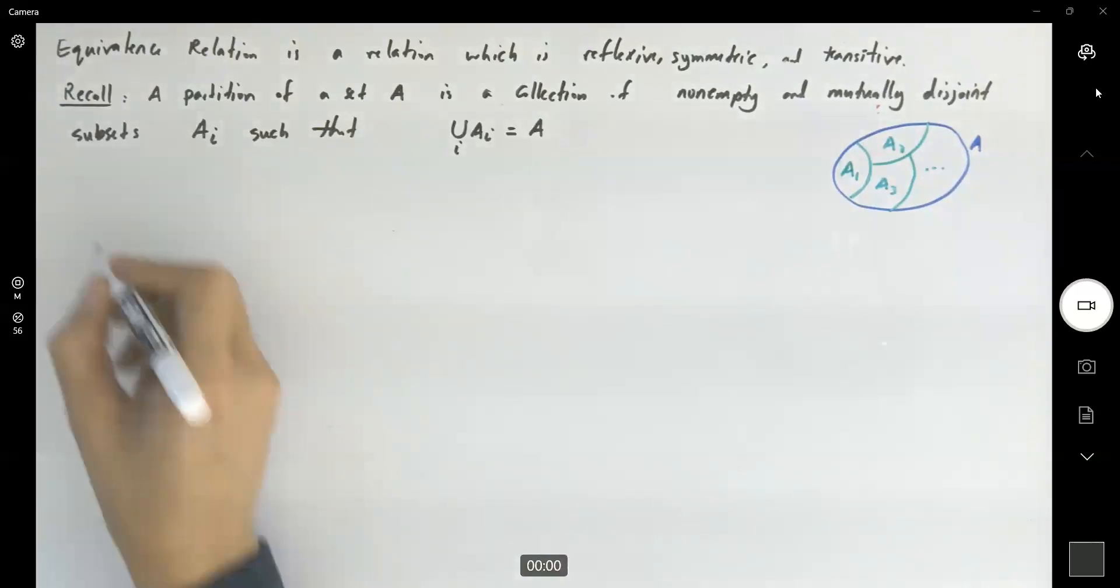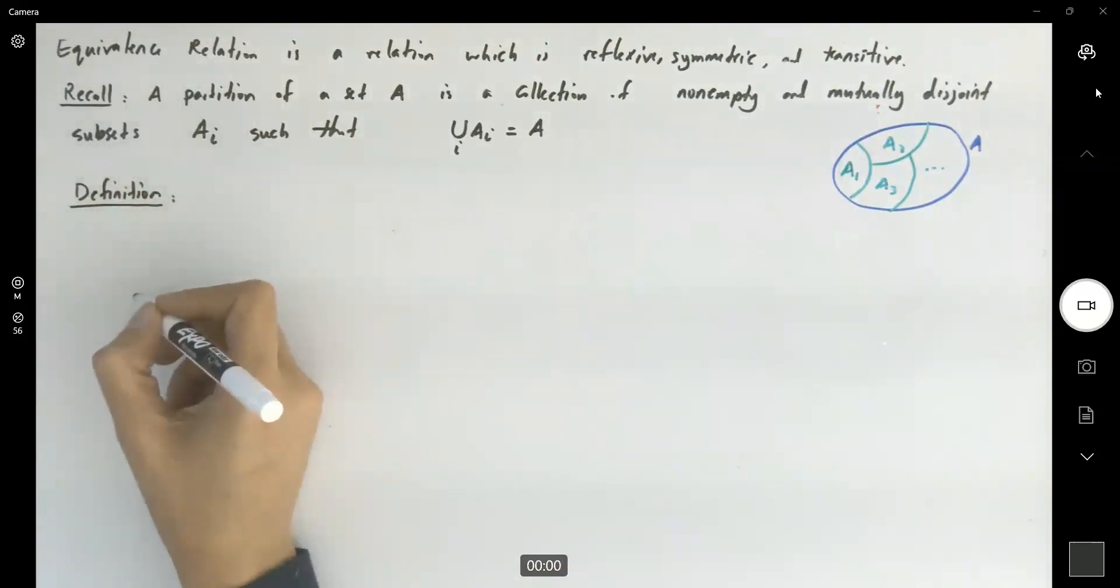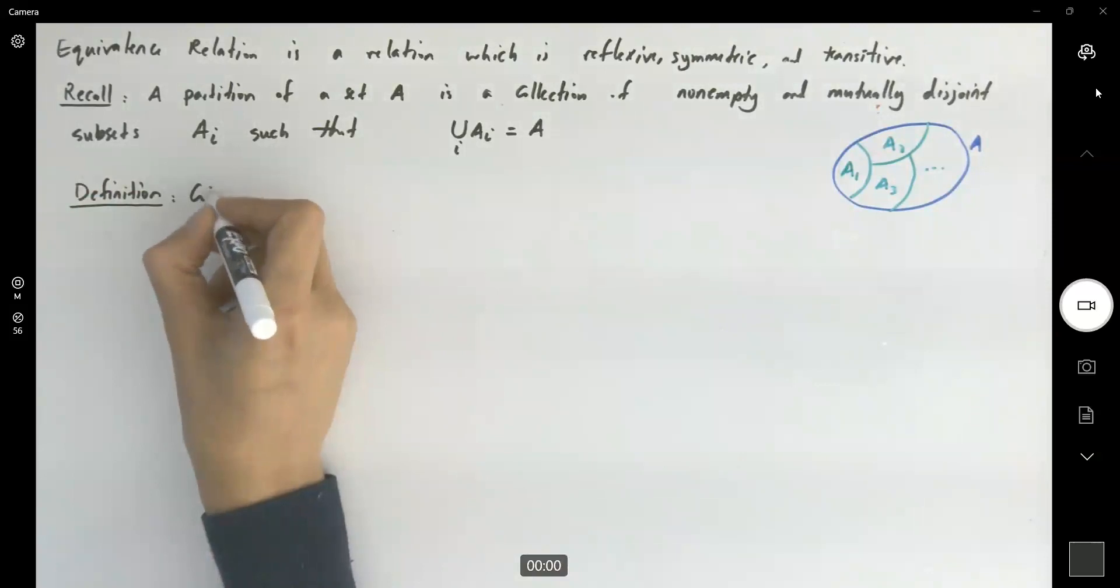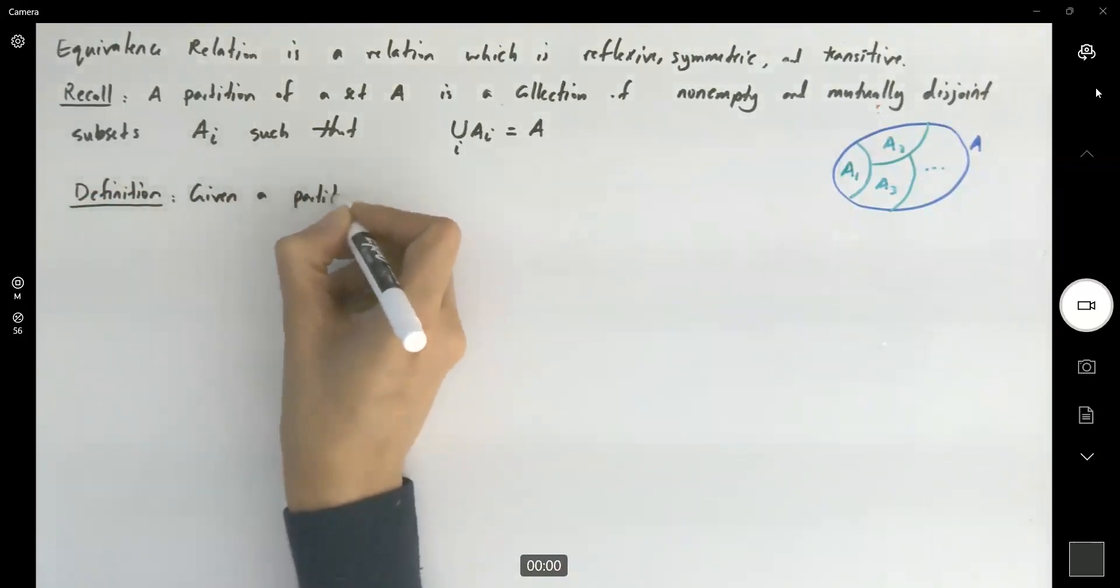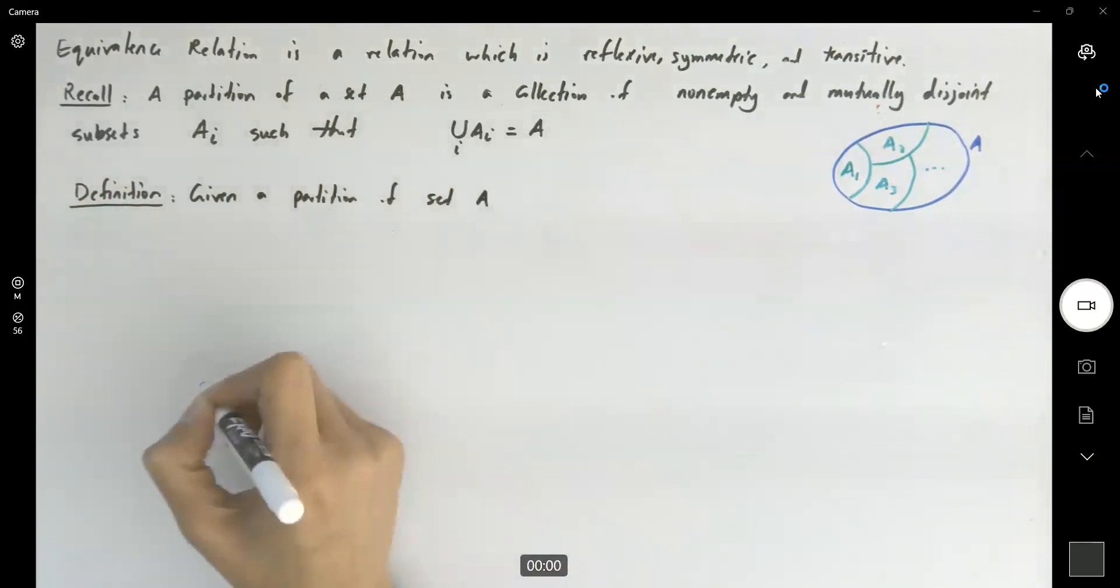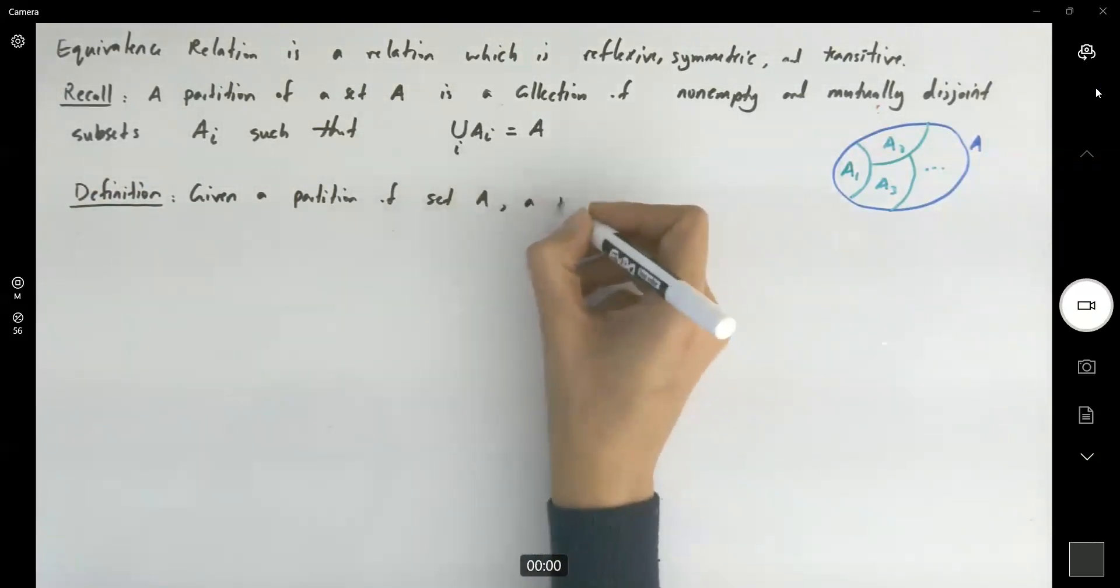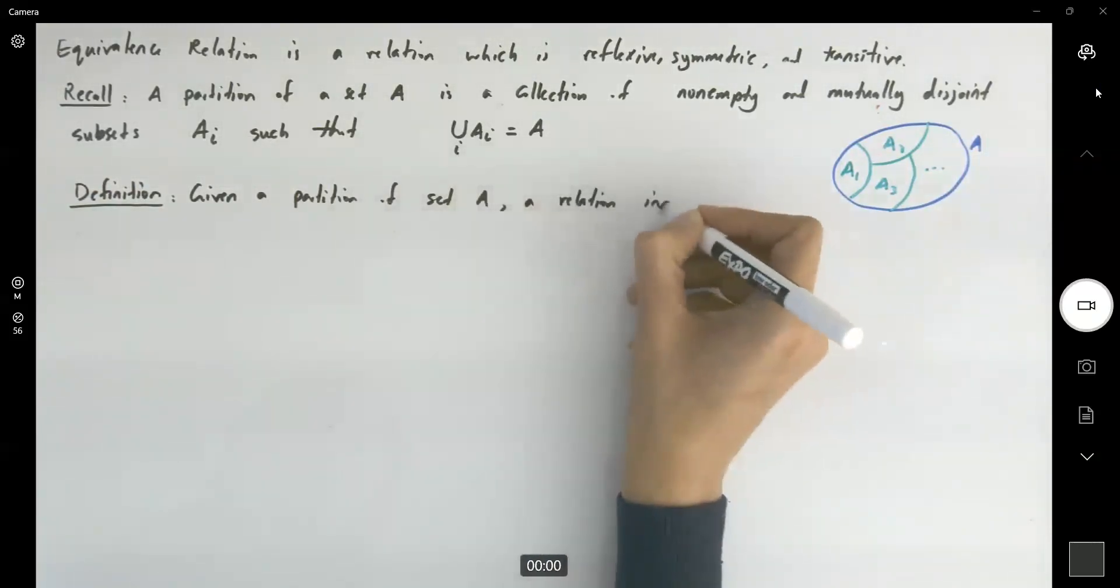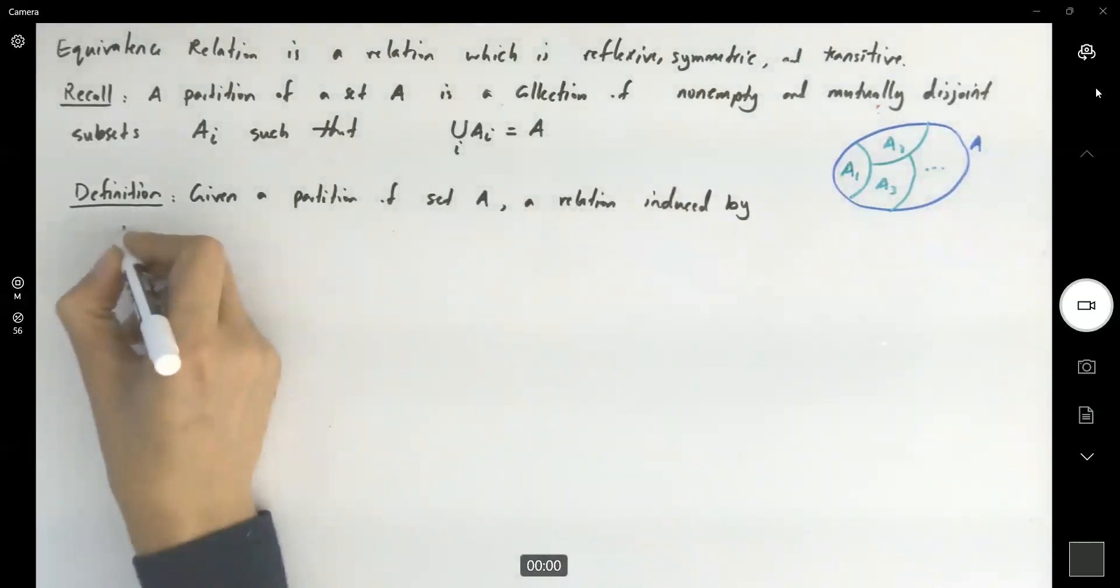Now we have a definition. This definition says, suppose you have a partition. Given a partition of set A, a relation induced by the partition.